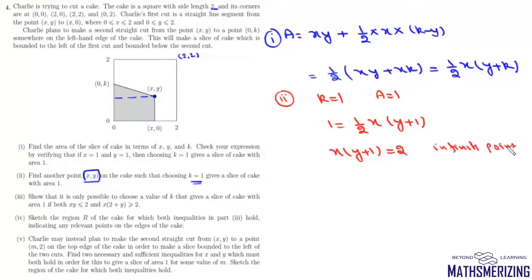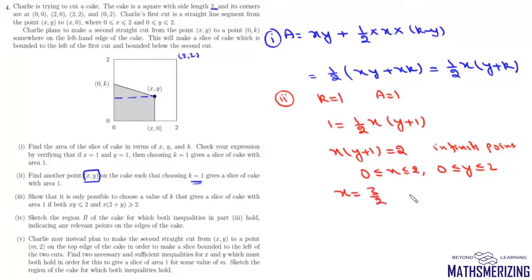We choose points with the constraint that x lies between 0 and 2, and y lies between 0 and 2, so any point on the hyperbola within the cake will suffice. One such point is x = 3/2: substituting gives (3/2)(y + 1) = 2, so y + 1 = 4/3, giving y = 1/3. There are infinitely many such points.